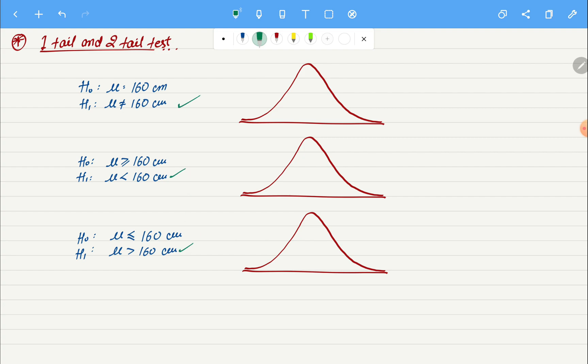Whenever you have not equal to, it will be a two-tail test. So you don't know whether to look on the left side or the right side, whether to test it for greater than or less than. So that's why you test both the tails, and your p-value lies in both the tails.